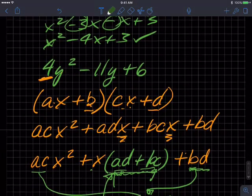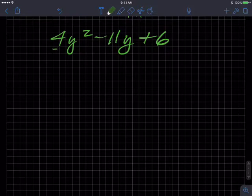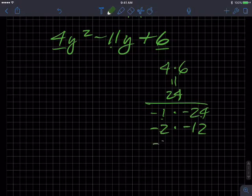So what was my example? 4y squared minus 11y plus 6. We're going to take these two values and find their product. So 4 times 6 equals 24. Now let's find factors of 24. Negative 1 times negative 24, do those sum to negative 11? No. Negative 2 times negative 12? No. How about negative 3 times negative 8? That's 24 and negative 3 plus negative 8 is negative 11. That's it, that's our guy.